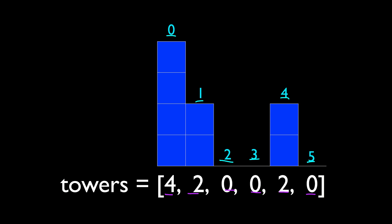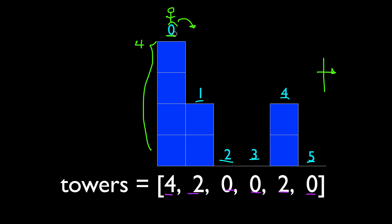The objective of this problem is: you start at index 0. Imagine you're standing on the tower at index 0 of height 4, and you're going to jump from tower to tower. We want to see if there's any way to get to outside of this array. The number of steps you can jump depends on the height of the tower you're standing on. If you're standing on the first tower at index 0, because the height is 4, you're able to jump at most 4 steps — so you can choose index 4, 3, 2, or 1.